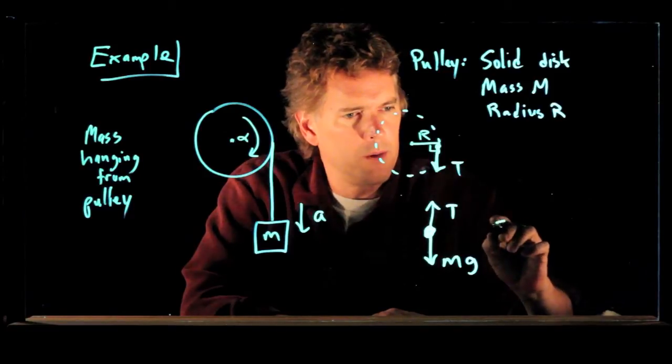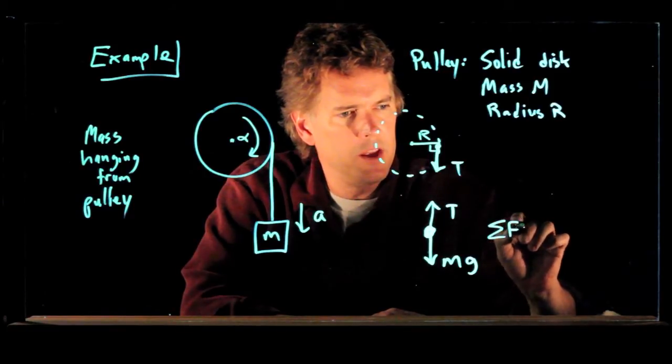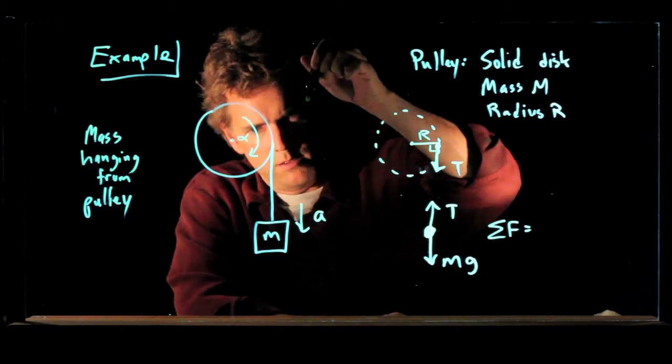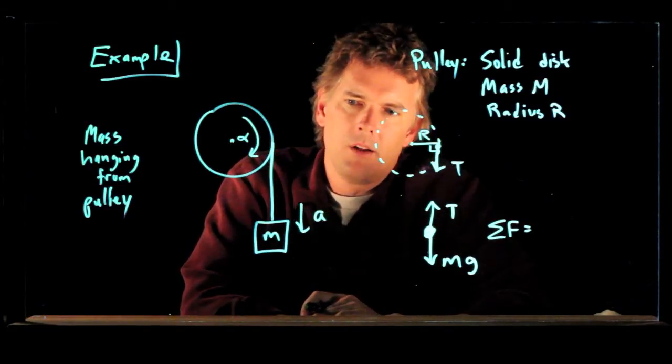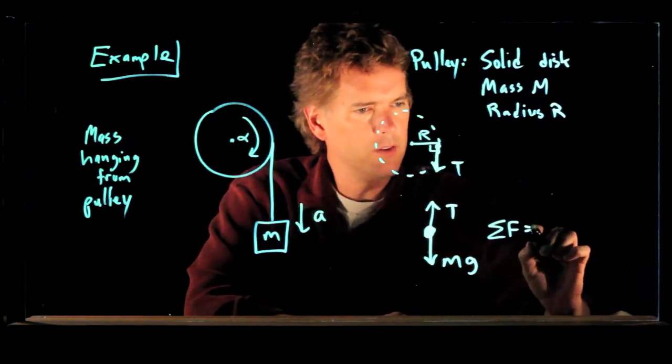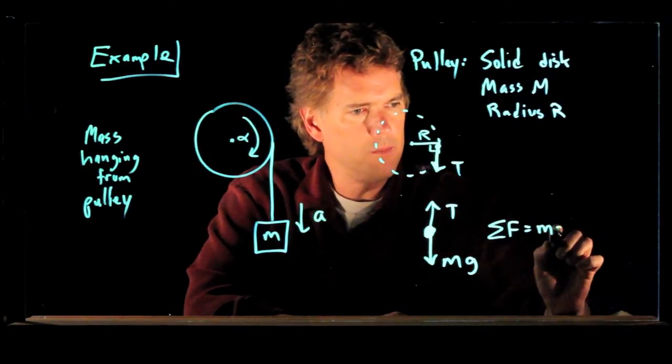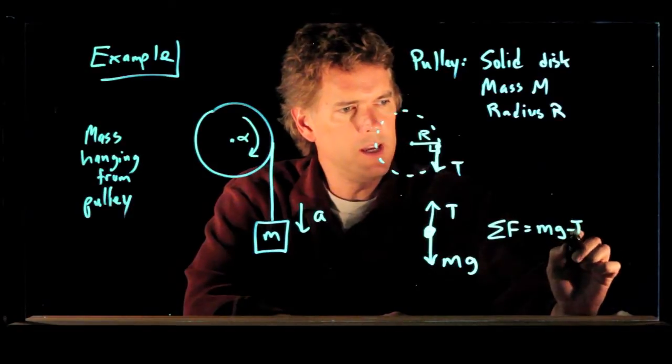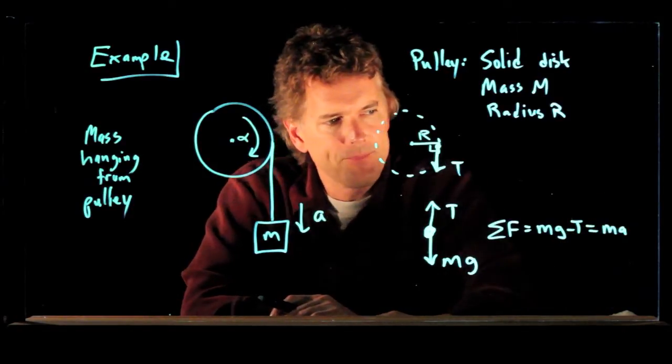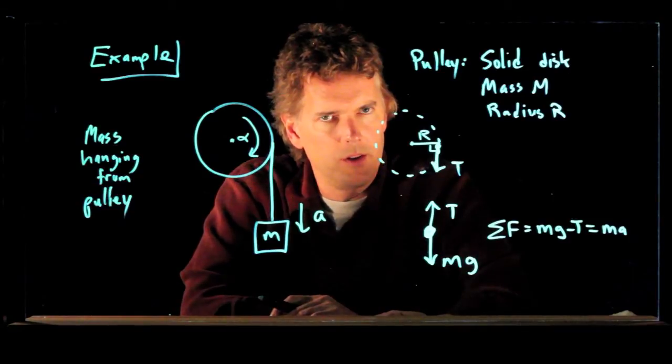So what can we say? We can say the sum of the forces here is equal to what? Well, A was going down, so let's pick down as our positive direction. So that means Mg minus T, and all of that is equal to M times A. That's one equation that's going to help us.